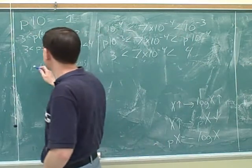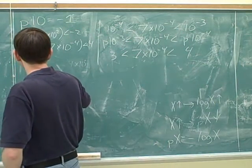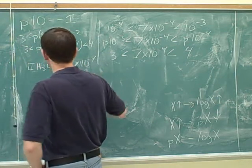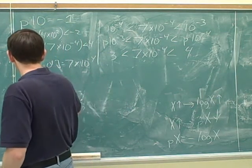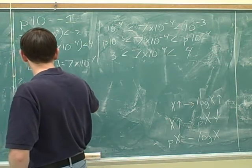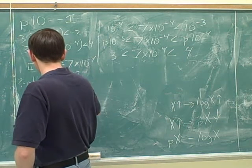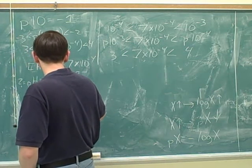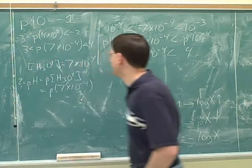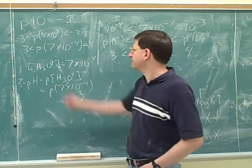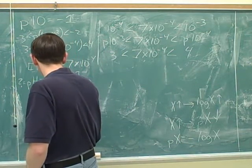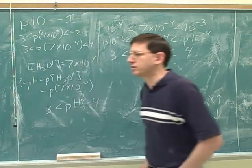How would this come up in a chemistry problem? Well, you might have figured out that the hydronium concentration was 7 times 10 to the negative 4, and then you might have had to figure out the pH. The pH is the p of the hydronium concentration — that's the p of 7 times 10 to the negative 4 — and we just figured out that that's between 3 and 4. So you would say you could approximate the pH: the pH is between 3 and 4.